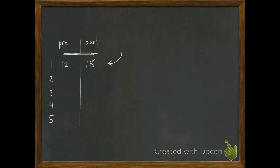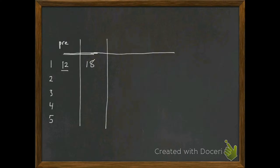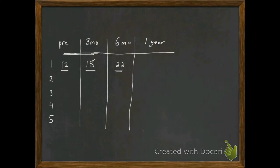Some people refer to it as a dependent samples t-test. Now let's extend that a little bit — not just pre and post, but let's say we took multiple measures. A pre-exercise program where this person has a fitness level of 12, then three months in they have 18, six months in they have 22, and one year later they have 24 — assuming higher fitness is better. So what we've done here is we have taken repeated measures.